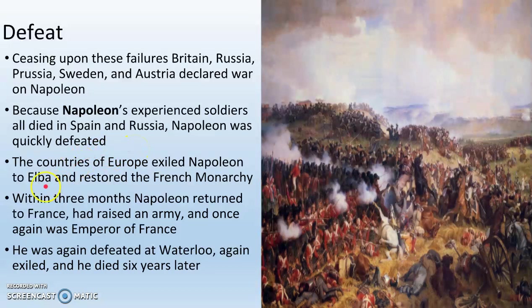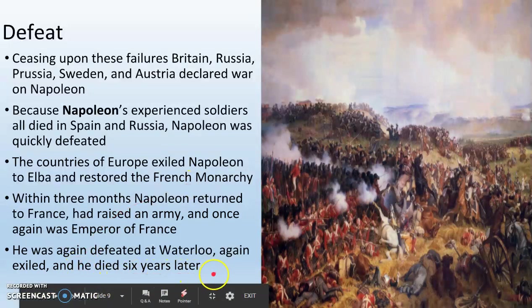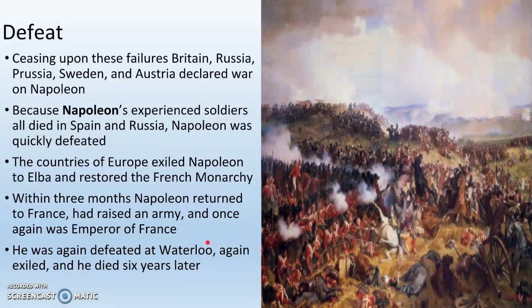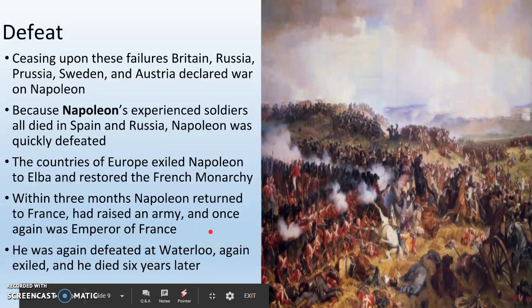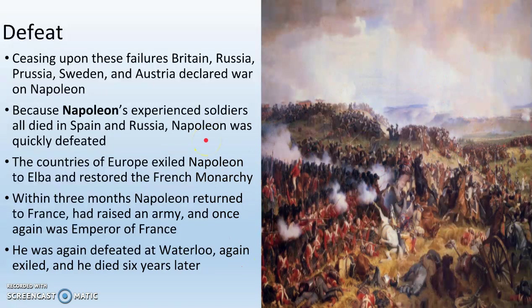They exile Napoleon on the island of Elba and restore the French monarchy — the Bourbons are back in charge. Within three months, interestingly enough, Napoleon returns to France, raises another army, and is again Emperor of France. But he is again defeated by the other European countries at the Battle of Waterloo, and he dies six years later — once again exiled. There are a lot of rumors that he was poisoned, but there is no evidence to prove it. This is a painting of the Battle of Waterloo, where Napoleon and the French ultimately lose to the allied European powers.